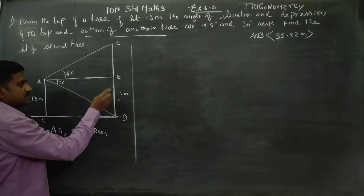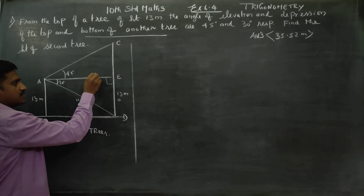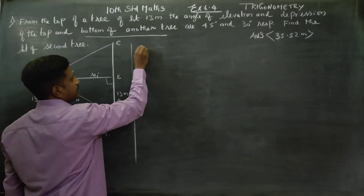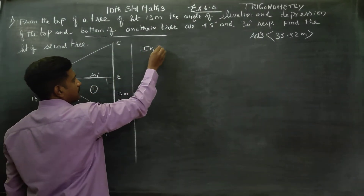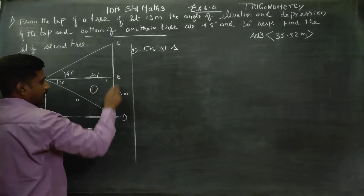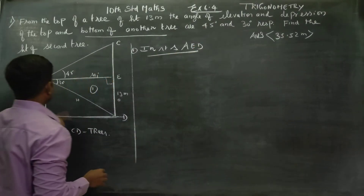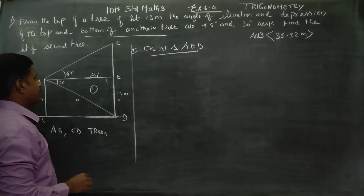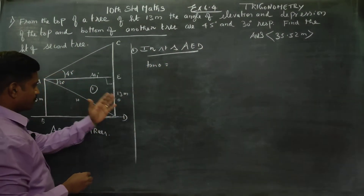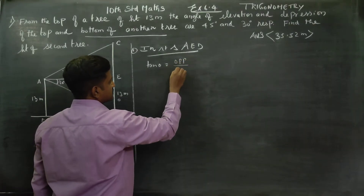The angle is at the opposite side. 90 degrees is the opposite. This is the opposite side, and this is the adjacent side. In right triangle AED, the tan theta formula is: tan theta equals opposite side divided by adjacent side.